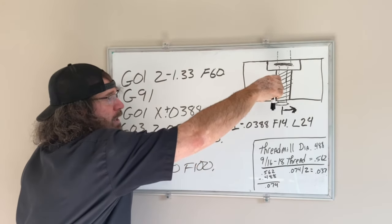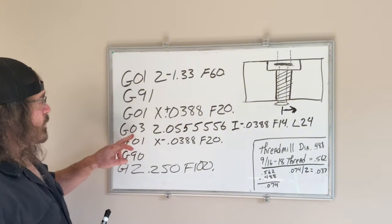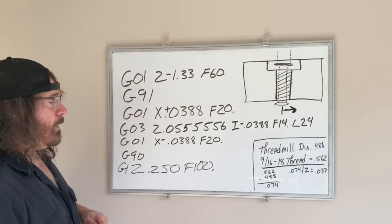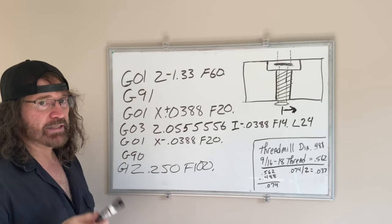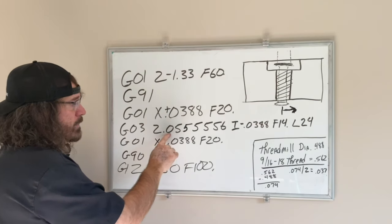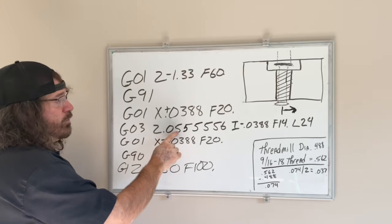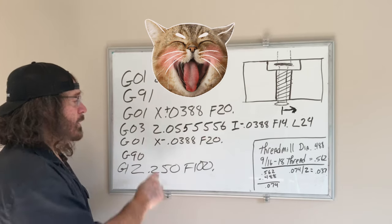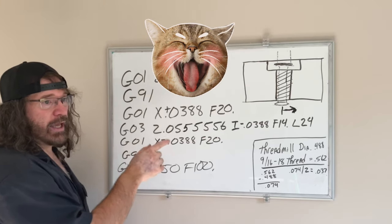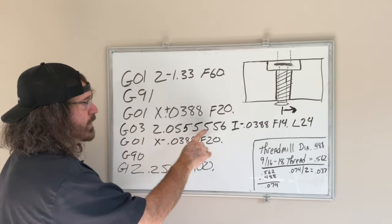So I shifted over from here. Since we are making right-hand threads, we have to start at the bottom and work our way up. So we do a G03. Now the thread pitch on 18 threads is 0.0555556, yeah tongue twister.